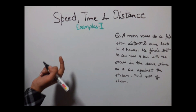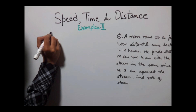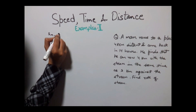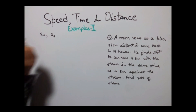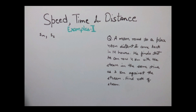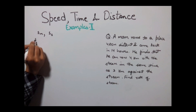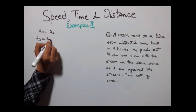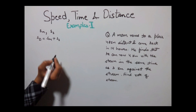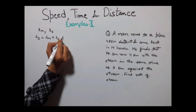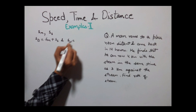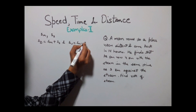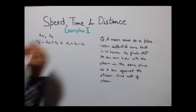Suppose the speed of the man is denoted by SM and the speed of the stream is denoted by SS. So speed of downstream would be equal to SM plus SS, and speed of upstream will be equal to SM minus SS.